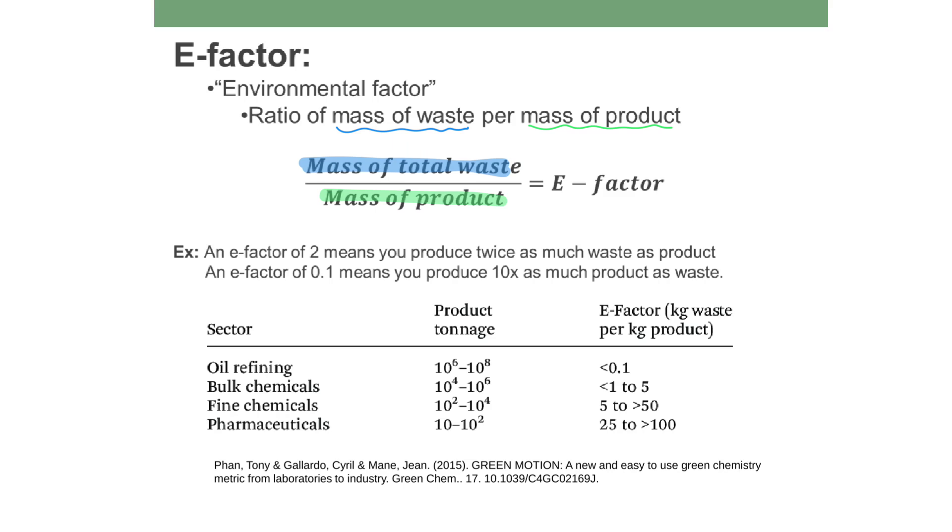So just look at this, some general numbers. If I have an e-factor of two, what that means is that you have twice as much waste as product, right? Because there'll be two over one. That's probably not where you want to be ideally. An e-factor of 0.1, or in other words, one tenth, means you produce 10 times as much product as waste. So you'd have a one up in the numerator and a 10 in the denominator to get 0.1. That's a much better place to be. You're not throwing away that much stuff and you've made a whole bunch of product that you're keeping.